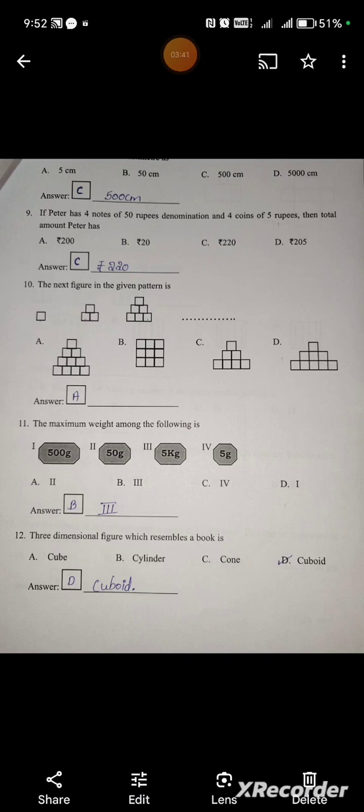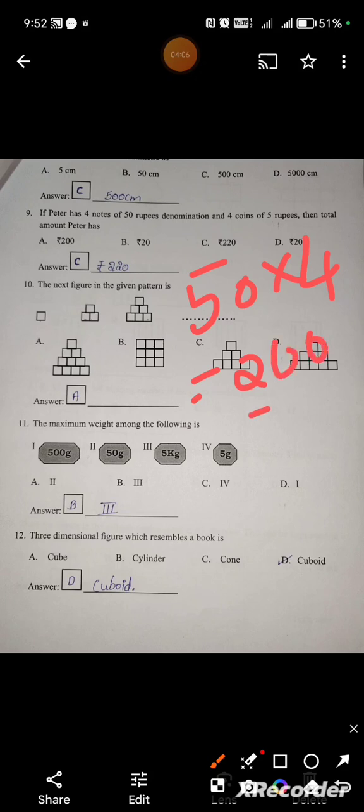If Peter has 4 notes of 50 rupees denomination and 4 coins of 5 rupees, then the total amount Peter has? 50 into 4, so 5 fours are 20, that's 200 rupees. 4 coins of 5 rupees is 20. 200 plus 20 equals 220.